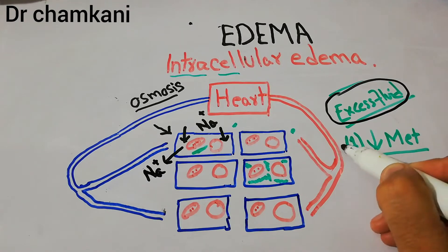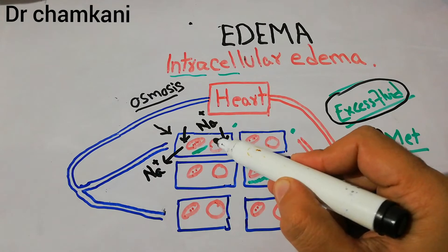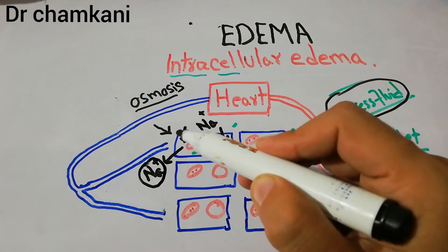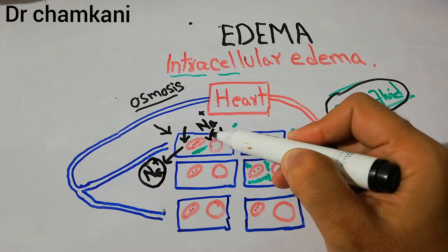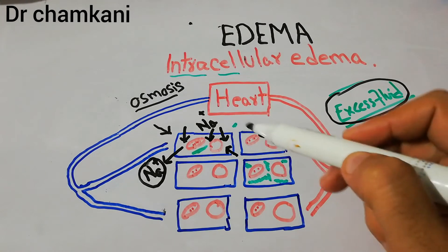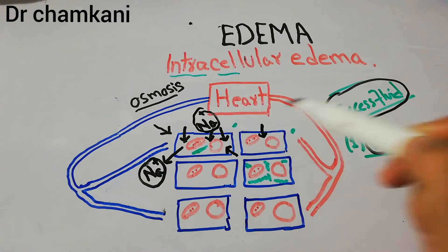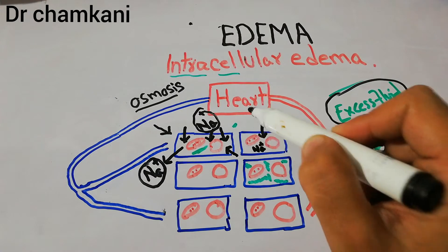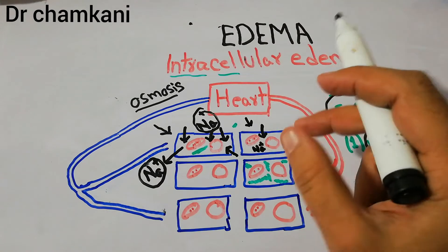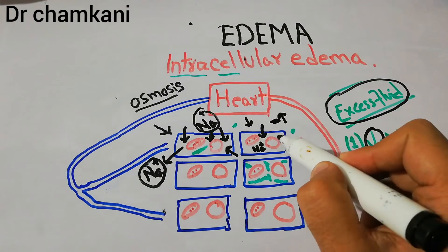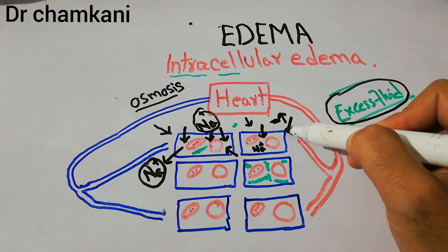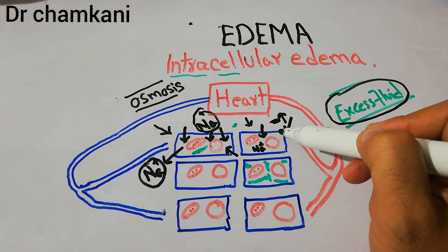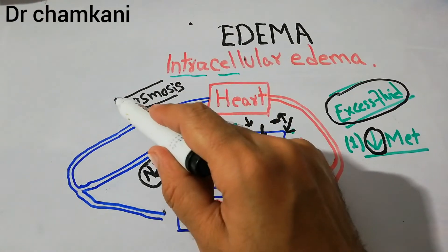If the metabolic activities of the cells are depressed, there is no force to throw sodium out of the cell. So sodium keeps entering, increasing the solute concentration inside the cell and decreasing it outside. Water concentration outside the cell increases and is lower inside, causing water to move inward across the semi-permeable cell membrane by osmosis.